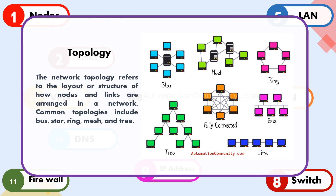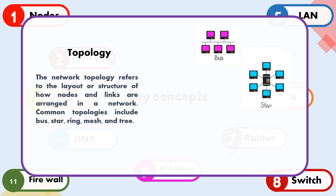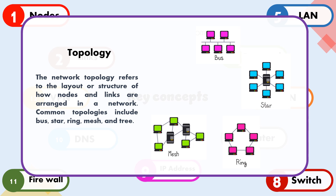Network topology refers to the layout or structure of how nodes and links are arranged in a network. Common topologies include bus, star, ring, mesh, and tree.